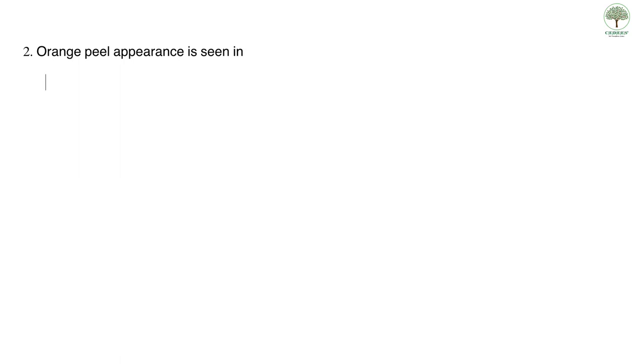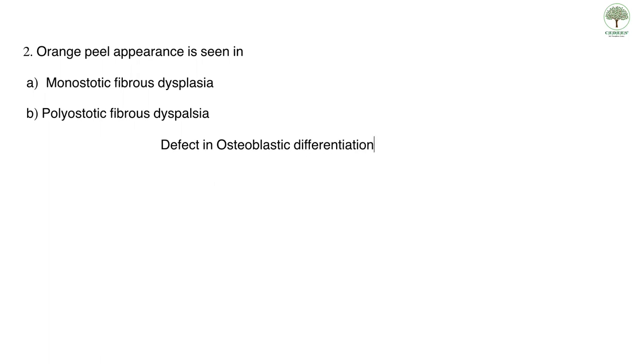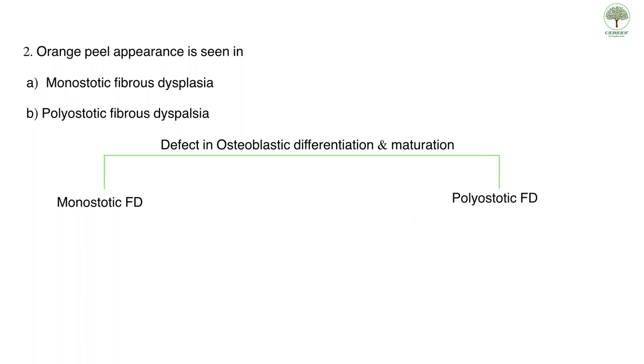Question two: orange peel appearance is seen in monoostotic fibrous dysplasia or polyostotic fibrous dysplasia? Fibrous dysplasia is a disorder of osteoblastic differentiation and maturation with two variants — monoostotic fibrous dysplasia involving a single bone, and polyostotic fibrous dysplasia involving two or more bones, also known as McCune-Albright syndrome. The orange peel appearance is classically seen in monoostotic fibrous dysplasia as a radiographic finding.